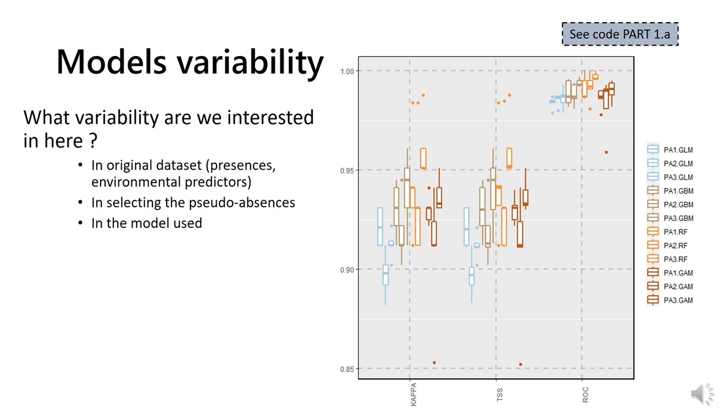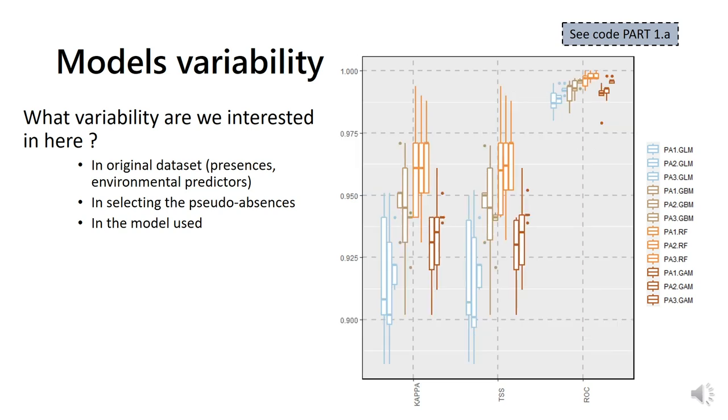In this example, the second set of pseudo-absences seems to produce results with lower kappa and TSS measures, regardless of the model. Here is the same example with new model runs. There seems to be more consistency between pseudo-absence datasets.